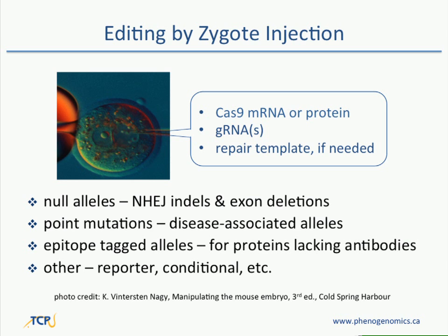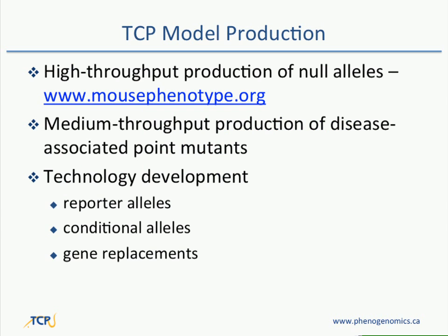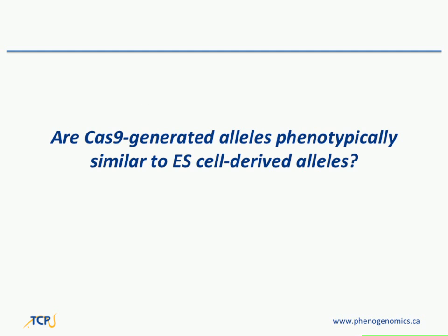We are still working on getting that kind of efficiency for reporter and conditional alleles. In our model production program, we have high-throughput production of null alleles for the International Mouse Phenotyping Consortium, and we also do some median-throughput production of disease-associated point mutations. These are generally outside of our publicly funded programs and are client-driven — individual investigators who come to us and say, I've identified this mutation in my patients and I want a mouse model for it.